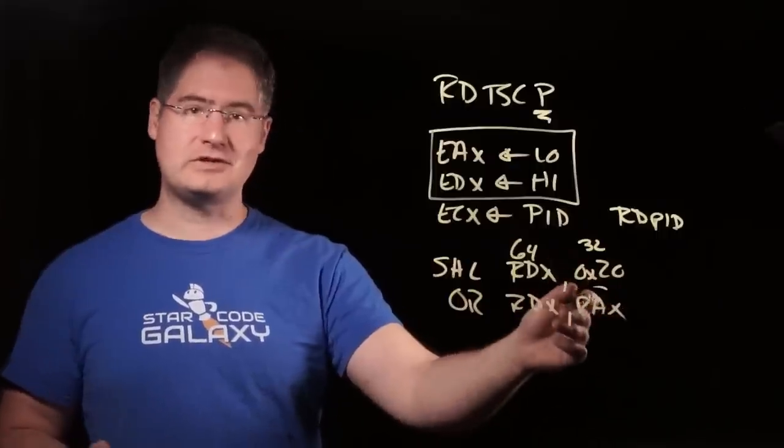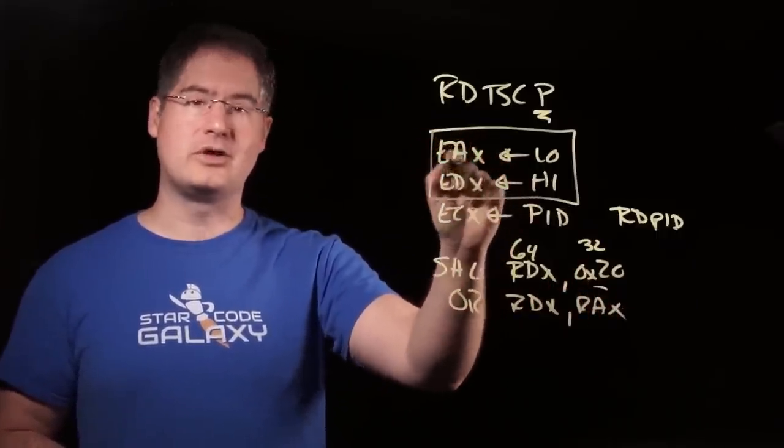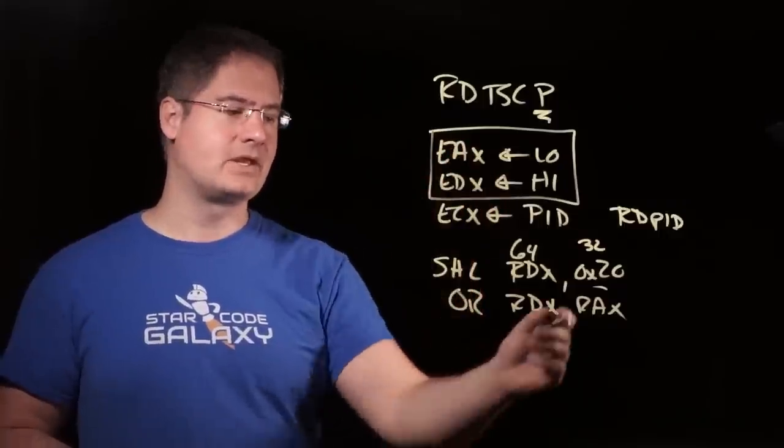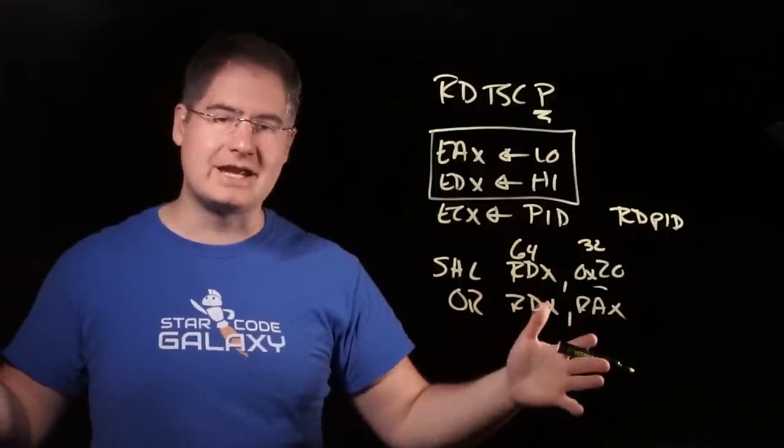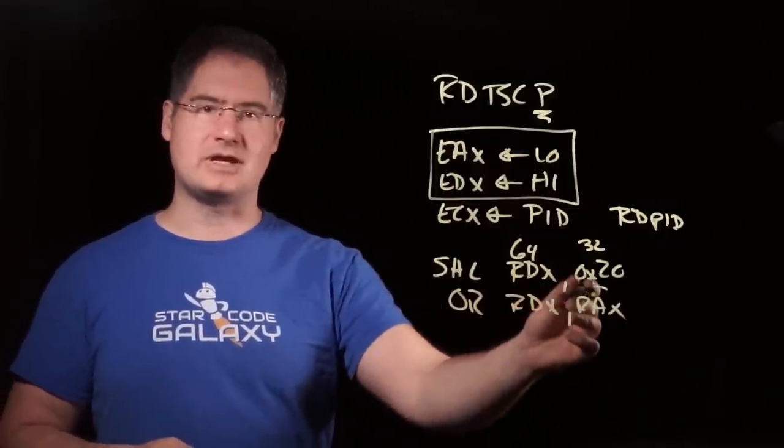OR RDX and RAX fused together the two parts. RAX is the 64-bit register that the low part was put into. This is the low 32 bits in EAX. RAX is a 64-bit width one. It does a 64-bit fusion of those by doing an OR. This combines them together, right?